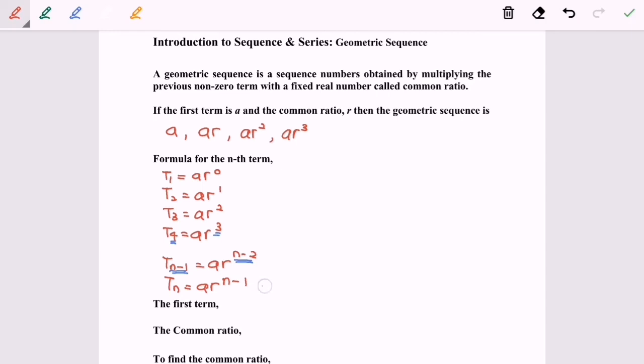Okay, so here we are, this is the formula for the geometric sequence for the nth term. The first term will be equal to A. The common ratio will be represented by R.